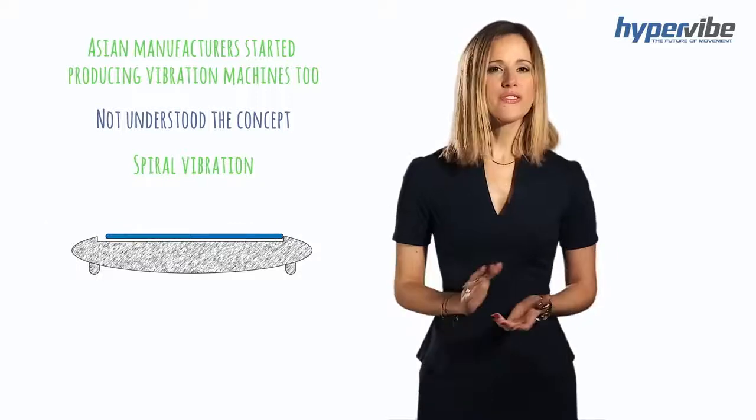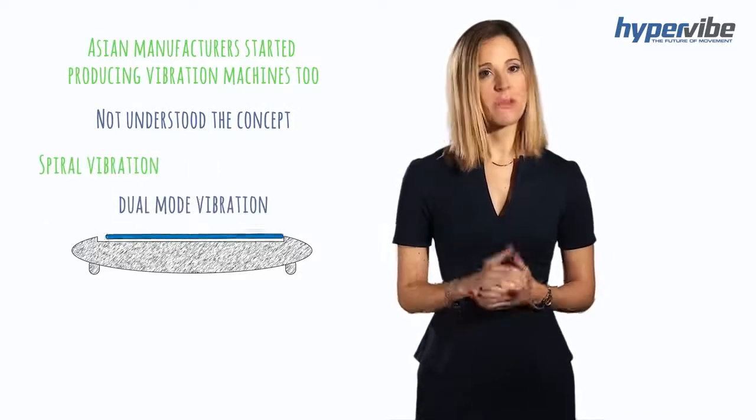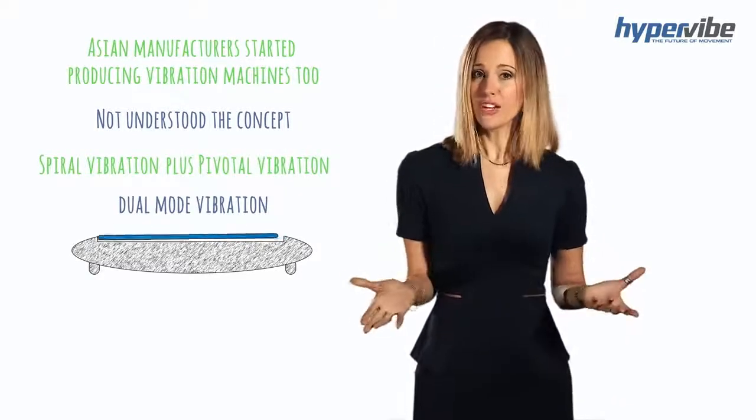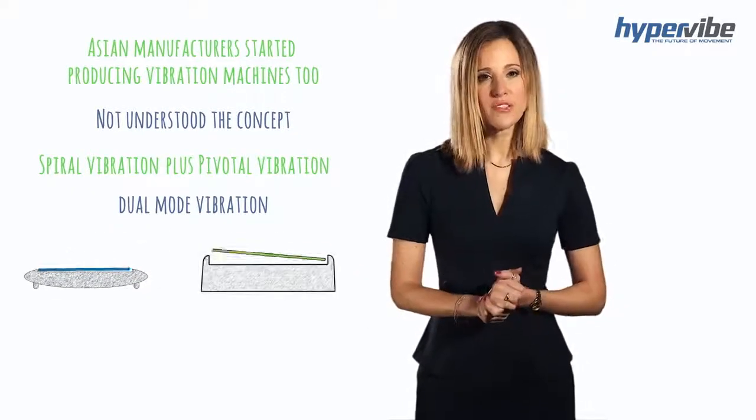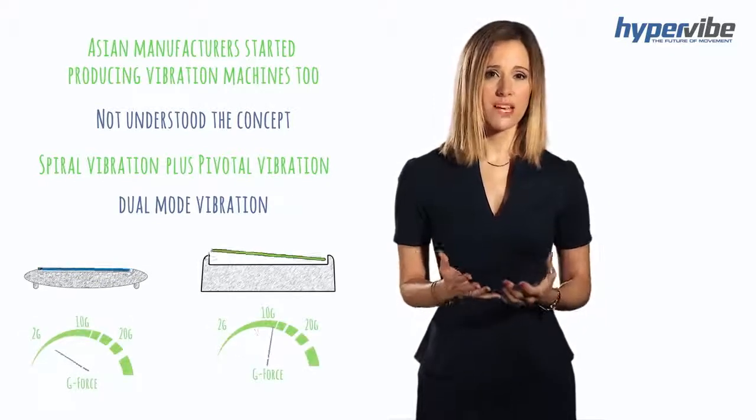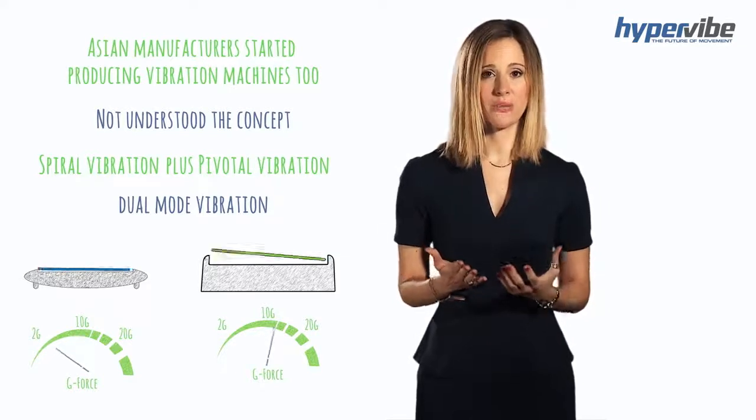Spiral machines are often capable of dual-mode vibration, where spiral vibration plus pivotal vibration operates at the same time. It sounds like a great feature. However, even with the addition of some pivotal vibration, these machines are not able to produce the same levels of upward g-force that the scientifically proven machines can.